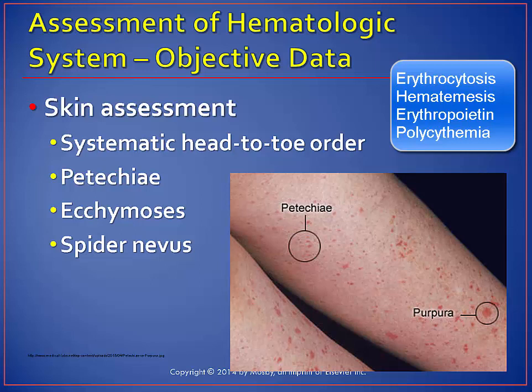Salicylates interfere with platelet function and can lead to petechiae and ecchymosis. Anti-seizure drugs can cause anemia. Oral contraceptives increase the clotting risk. In general, skin and mucosal bleeding indicates a platelet disorder, whereas spontaneous bleeding into joints or muscles indicates a coagulation factor problem. Excessive bleeding from trauma can be due to either or both.